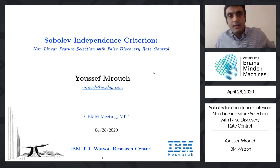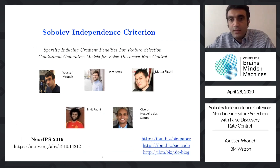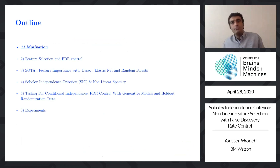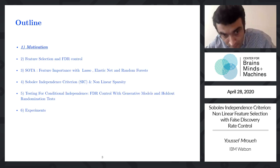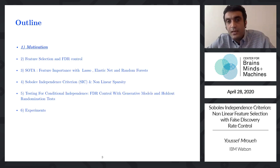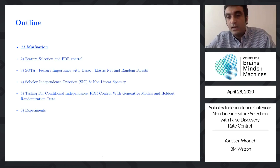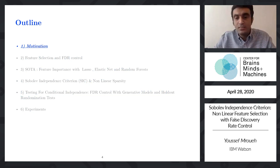I will be talking today about the Sobolev independence criterion. It's a method for nonlinear feature selection where we also care about doing false discovery rate control. This is joint work with colleagues from IBM: Tom Sercu, Mattia Rigotti, Inkit Padhi, and Cicero Dos Santos. I'll start with some motivation, then delve into feature selection and false discovery rate control, cover methods from lasso to random forests, present our SIC method and its relation to nonlinear sparsity, and finish with experiments.